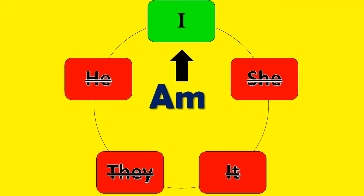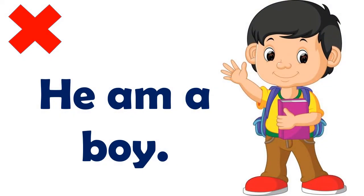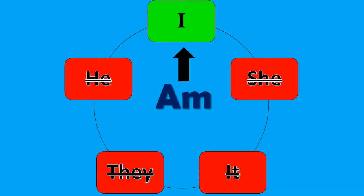And you know students, 'am' cannot be used with any other word. For example, 'he am a boy' — is that correct English? No. So students, 'am' can only be used with 'I'. It cannot be used with any other word like he, she, it, they, etc.